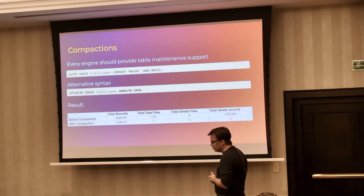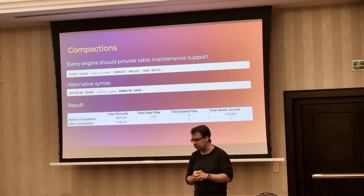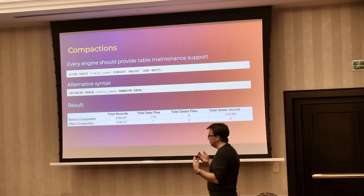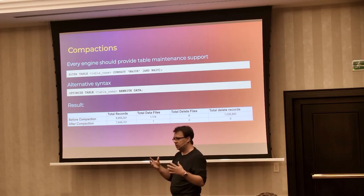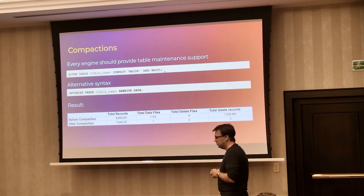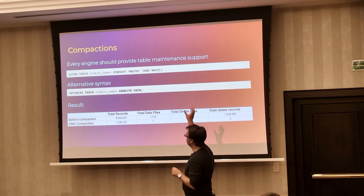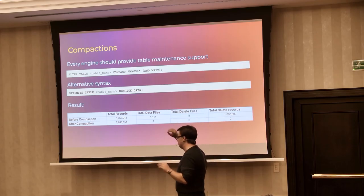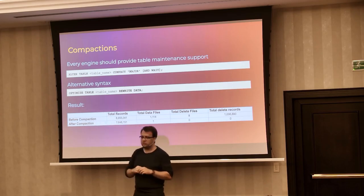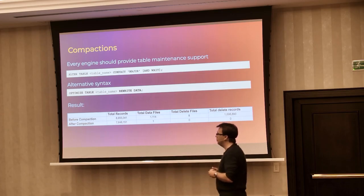Table maintenance and compaction are very important. In Hive itself, if you need compaction you can execute it — we have major and minor compaction available on top of Iceberg tables, as well as a separate thread for ACID tables. For Hive Iceberg, you execute the ALTER TABLE compaction command. We also have syntactic sugar with the OPTIMIZE TABLE command, which does the same thing in a more modern way.